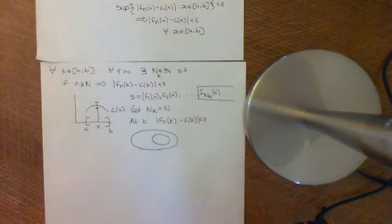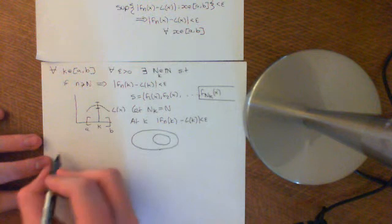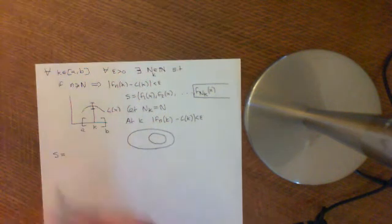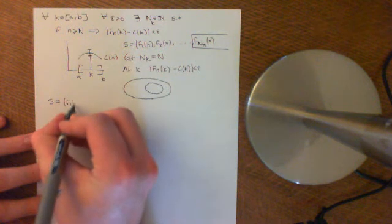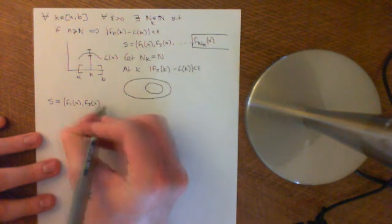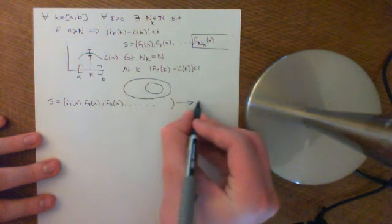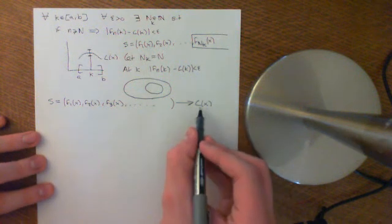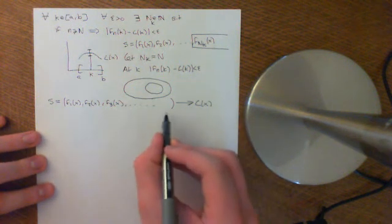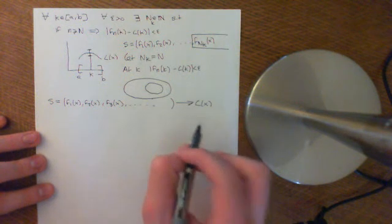Now let's discuss how the other direction doesn't necessarily hold true. If you have a sequence of functions S = F1(x), F2(x), F3(x), etc., which converges pointwise to L(x), that does not necessarily imply that it converges uniformly to L(x). So it does not necessarily imply that it converges in the metric space C(A,B) with the supremum metric on it, even assuming all functions are elements of C(A,B).